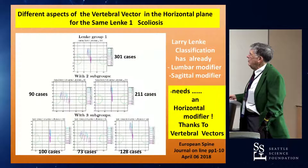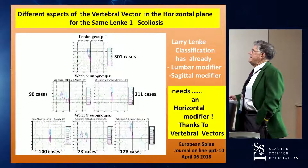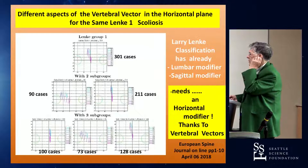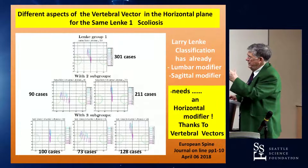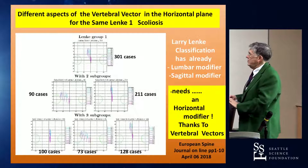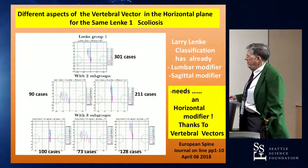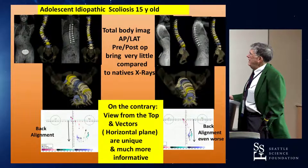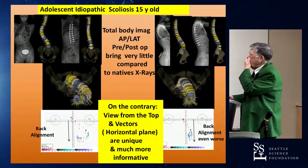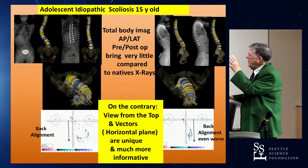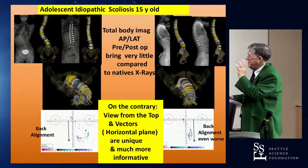If you take a group of same-length A1 scoliosis — 301 cases — stratified afterward, we can divide them into three completely different classes. I said to Larry one day: you need to have a horizontal classifier. This was published in the European Journal. When you see the reconstruction compared with what you see in the x-ray, it is not very clear. But when you see it from the top, you see very clearly the difference — and for me, much more informative.